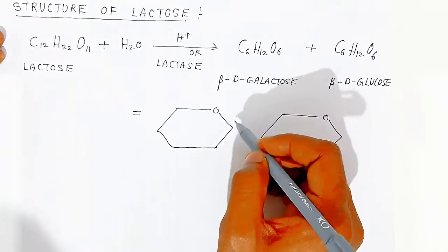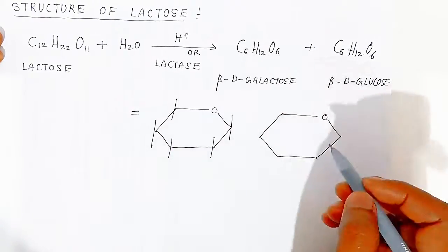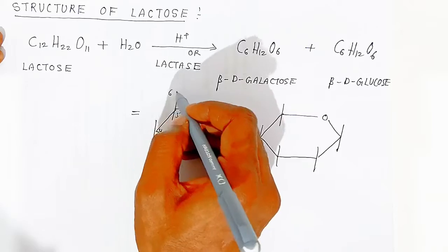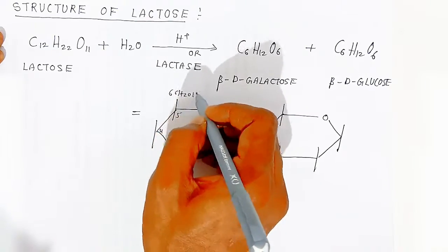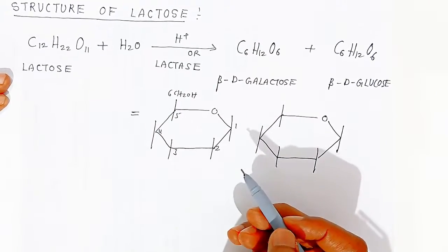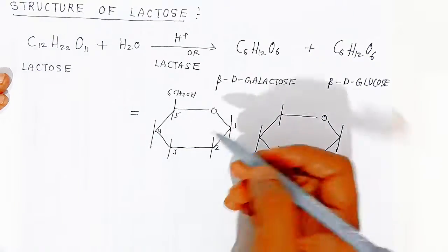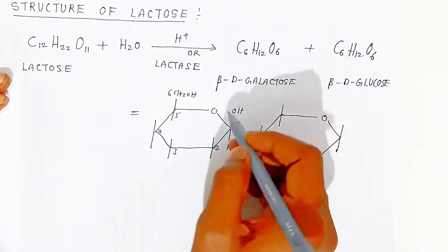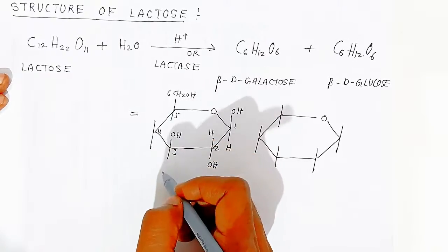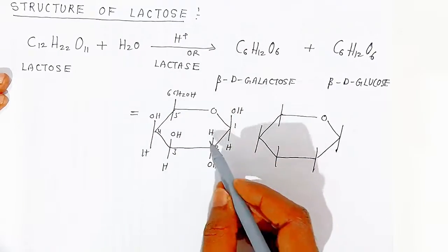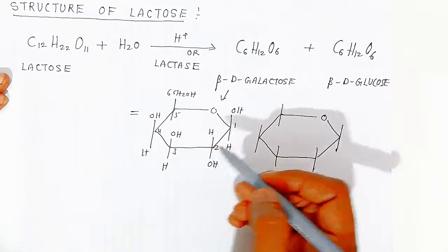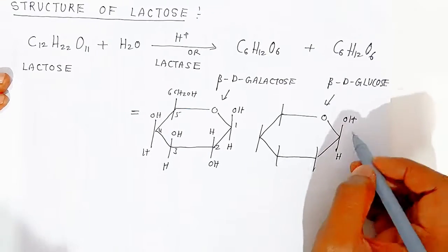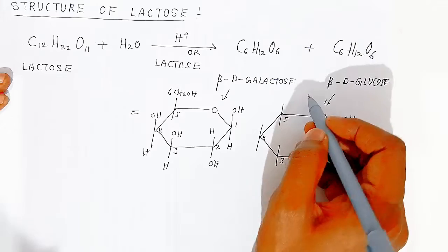Because carbon is tetravalent, draw tetravalency at each carbon. Label carbons 1 through 5, with carbon 6 as CH₂OH. In beta-D-galactose, since it is beta, the hydroxyl is above and hydrogen is below at carbon 1. Similarly for beta-D-glucose, OH is above and hydrogen is below at the first carbon.